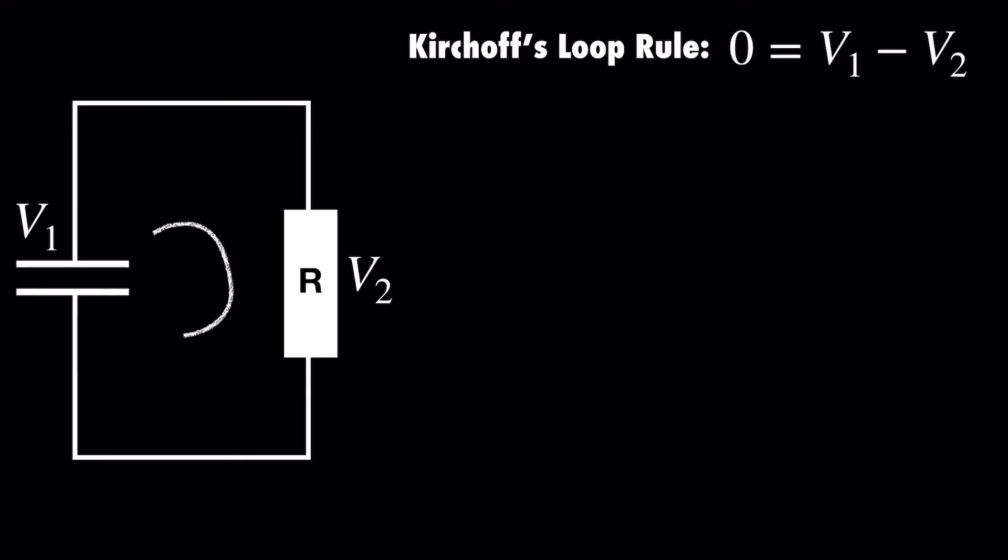The capacitor acts as the source and the resistor is where the energy is dissipated, so it's negative. Our next step is to find out more about what V1 and V2 are.